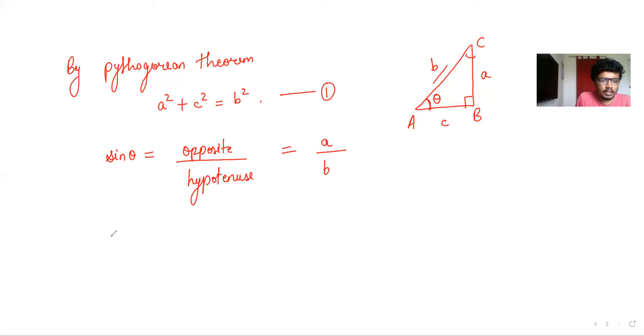Similarly, cosine θ by definition is adjacent side by hypotenuse, which is basically in our case c by b.